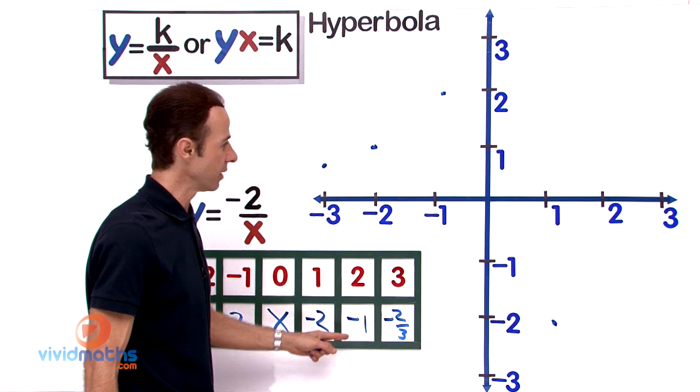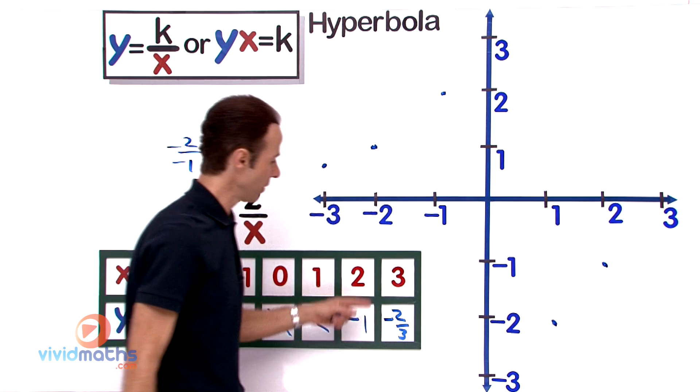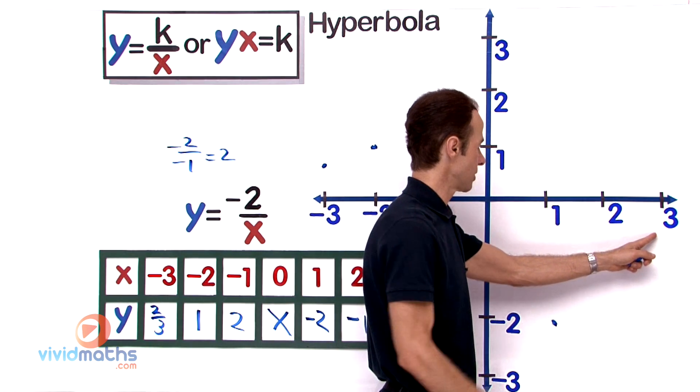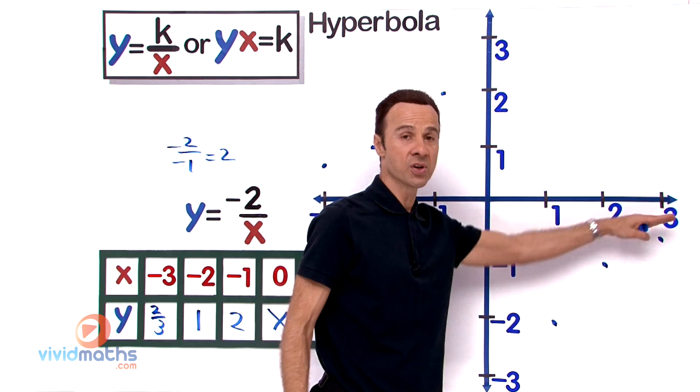We have 2 and negative 1—that's going to be about there. And finally, 3, negative 2 thirds. There's our 3 negative 2 thirds, about there.